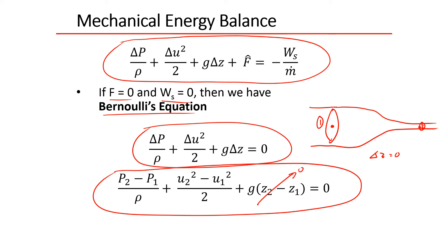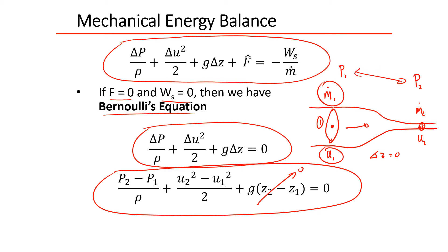So I have a fluid flowing this way. This is mass flow rate 1 and mass flow rate 2. At steady state, those two are going to be equal. What I need to do is calculate a velocity at both locations. Given mass flow rate 1, I calculate the velocity, and then I want to be able to calculate the pressure difference between points 1 and 2.